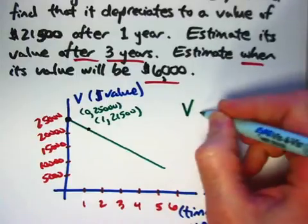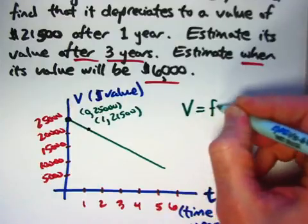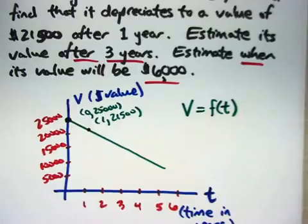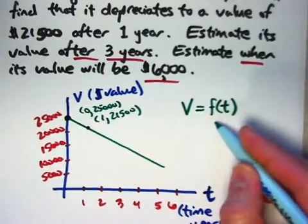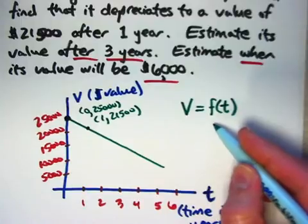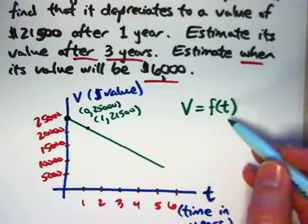V is a function of t. Sometimes this notation - well, I should say almost always this notation is used. The f here is not a number, it's a function name. F is the most common name for functions. V and t are numbers, well they're variables that represent numbers.